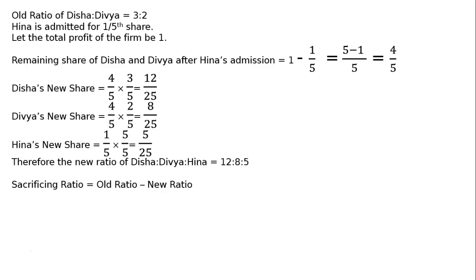Sacrificing ratio equals old ratio minus new ratio. Disha's sacrifice is 3 upon 5 minus 12 upon 25, that is 3 by 25.